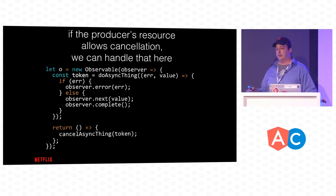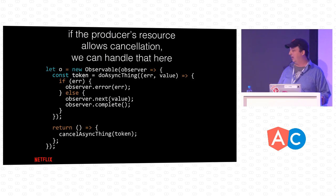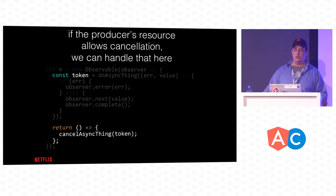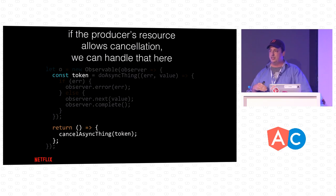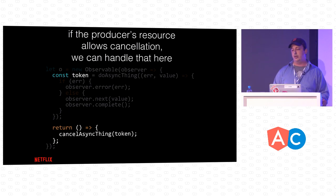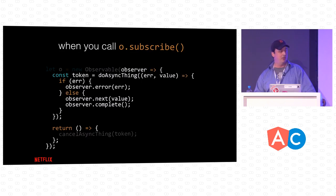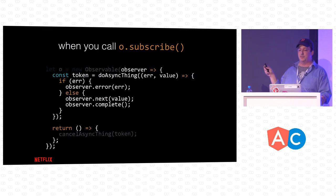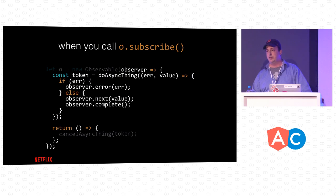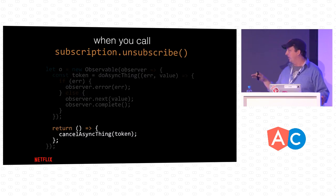If the producer gives you some sort of cancellation — like setTimeout, which gives you a token — you can handle that in the observable. The function you pass to the observable constructor can return a function, and that returned function is your unsubscribe method. It gets called whenever you unsubscribe to tear down resources like a WebSocket or XHR abort. When you call subscribe, it executes the body of that function and sets up your producer. When you call unsubscribe, it calls whatever function you returned to tear down the producer.